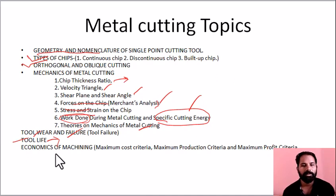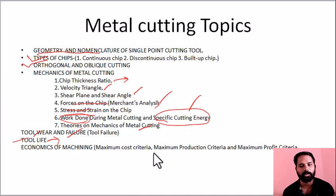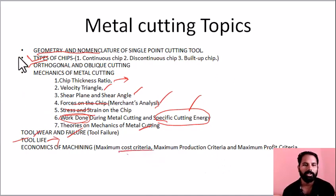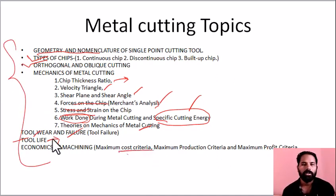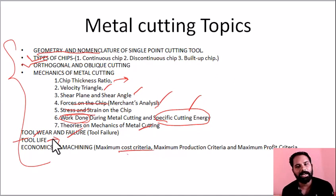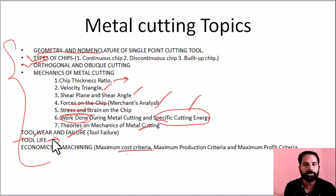In economics of machining, there are 3 important criteria: maximum cost, maximum production, and maximum profit. This completes the metal cutting topic in manufacturing. All these topics are available in the playlist — make sure to review them. Thank you.